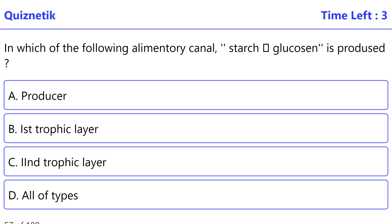In which of the following alimentary canal starch glucosin is produced? The correct option is B, 1st trophic layer.